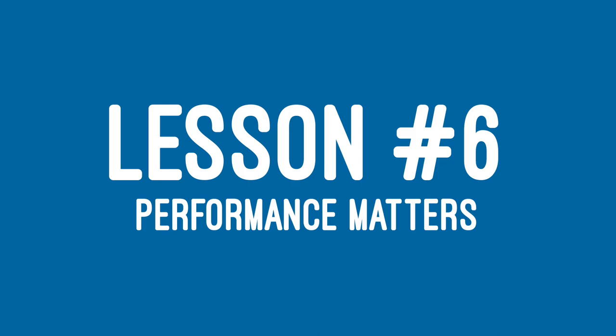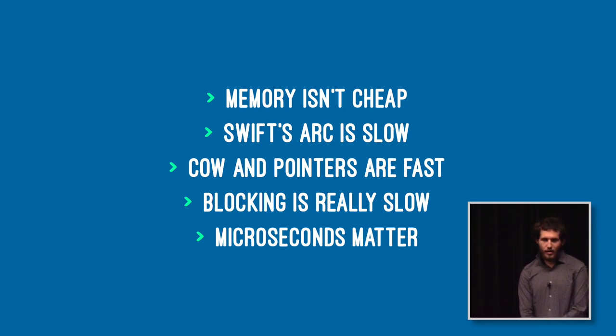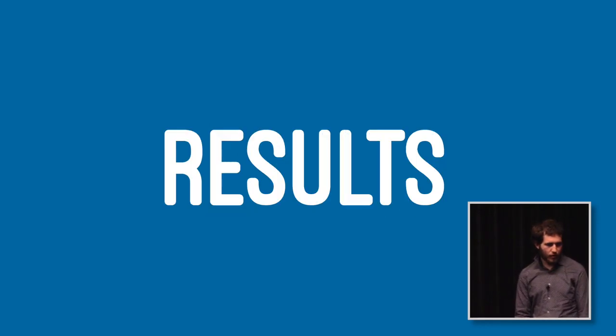Performance really matters. 0.1 ms doesn't sound like much, but it limits you to 10,000 calls per second on a single thread. If you're rendering a frame in iOS that's not a big deal, but if the plus operator in Swift took 0.1 ms, you'd be doomed. Conclusions: it's not cheap, performance is tough, ARC is slow. But you can take advantage of a lot of things, and you should.